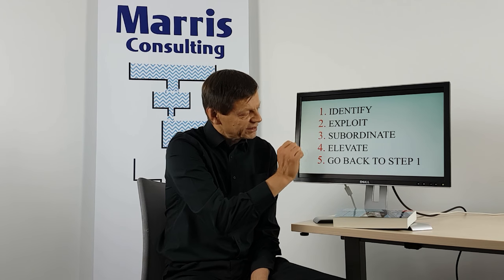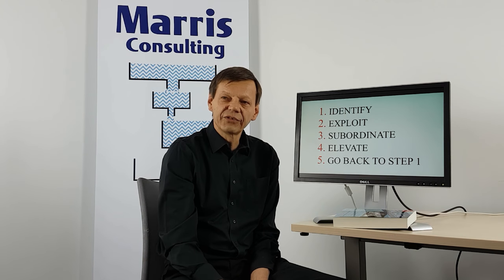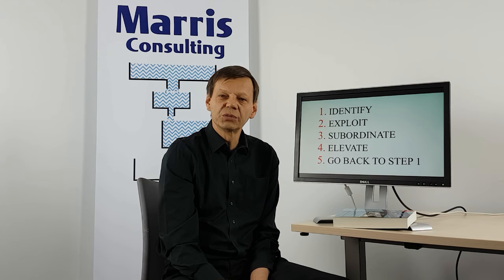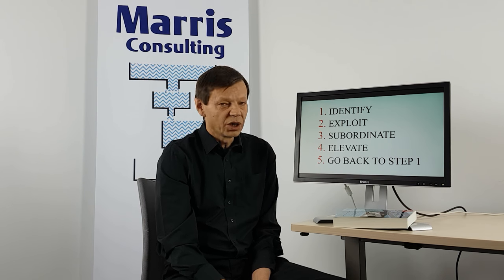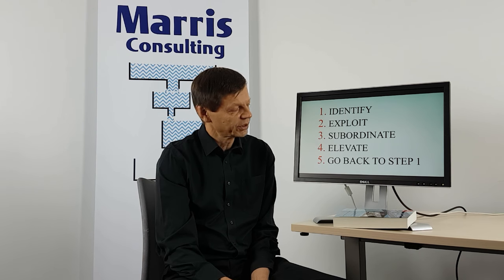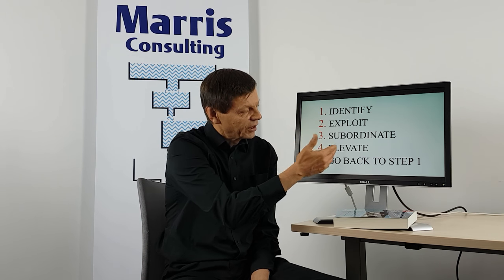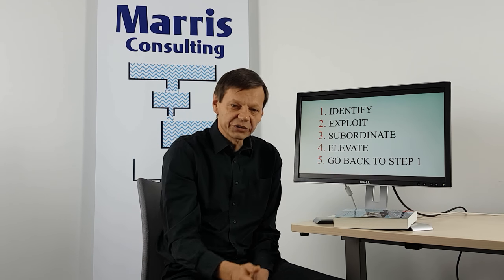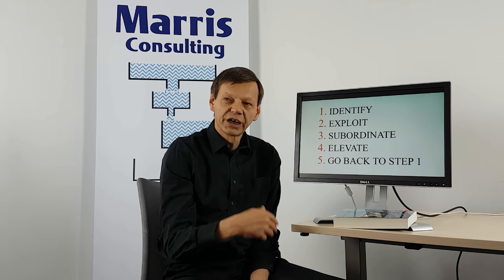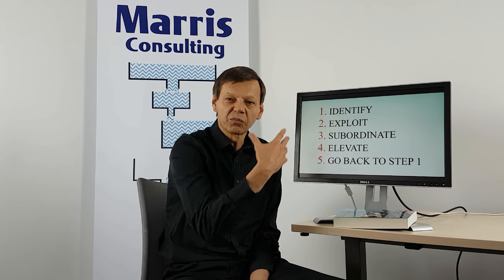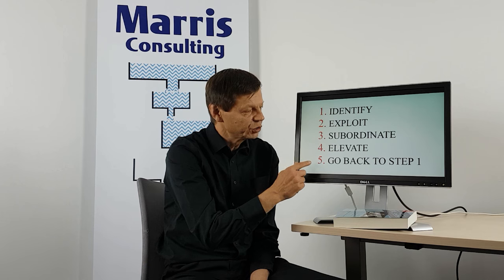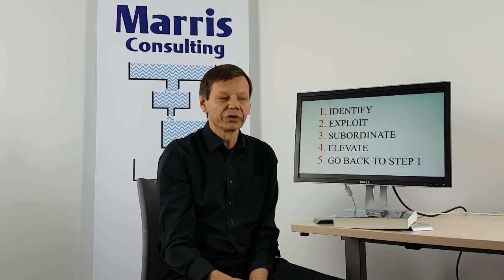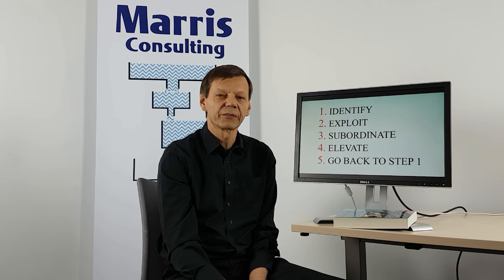Finally, once you've got that set going, you could consider elevating the performance of the constraint by investing in more machinery, or going from two shifts to three shifts, or whatever. If you increase the capacity of the bottleneck, the bottleneck might move to somewhere else in the factory. If that happens, you go back to step one, find out where it's gone, and keep this process going.